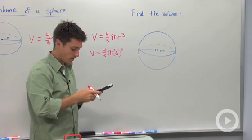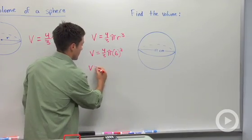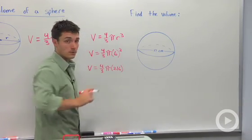Now, six cubed, if I use my calculator, is 216. So I'm going to say volume is equal to four-thirds pi times 216.